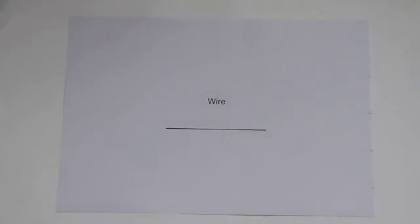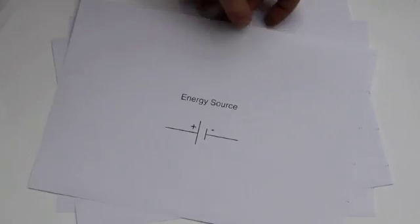Let's recap. The essentials in a circuit are the wires, the switch, the energy source, and the resistor.